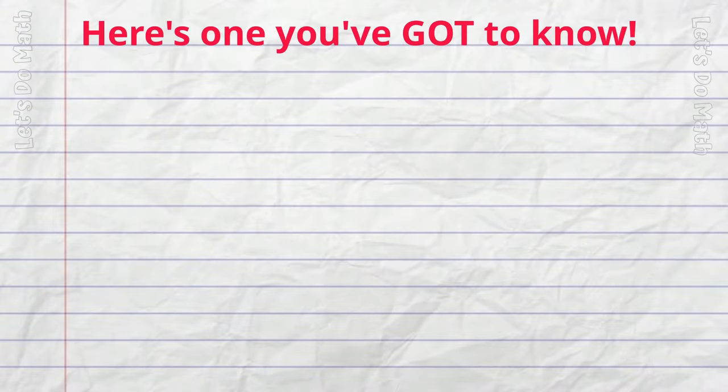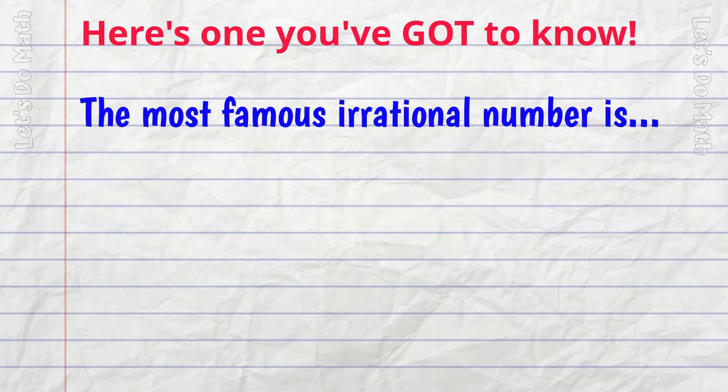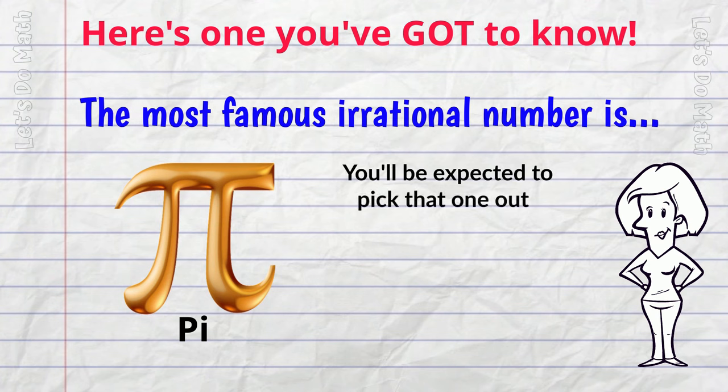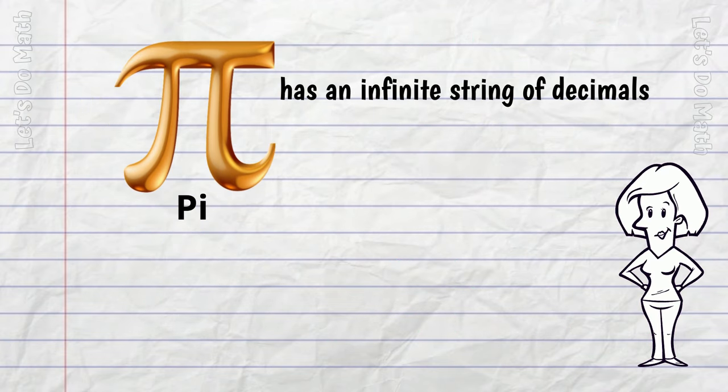And here's one you've got to know! The most famous irrational number is pi. I guarantee you'll be expected to pick that one out as an irrational number and say why! Pi has an infinite string of decimals with no pattern!